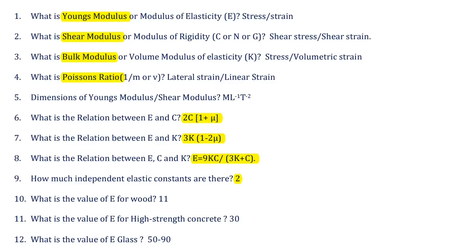To summarize the symbols: E means Young's modulus; C, N, and G mean Shear modulus or modulus of rigidity — generally C is used for shear modulus and G is used for modulus of rigidity; and K means Bulk modulus.